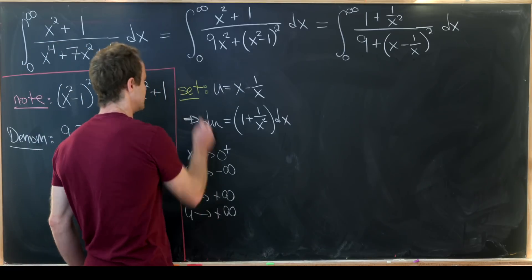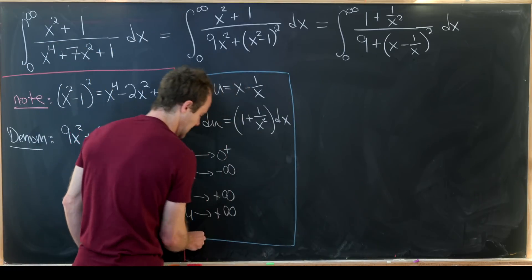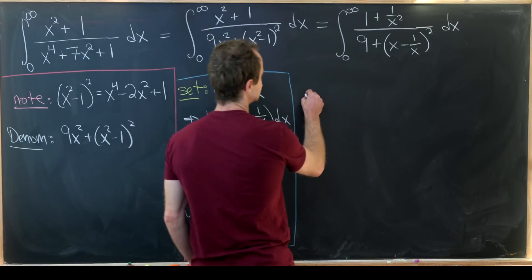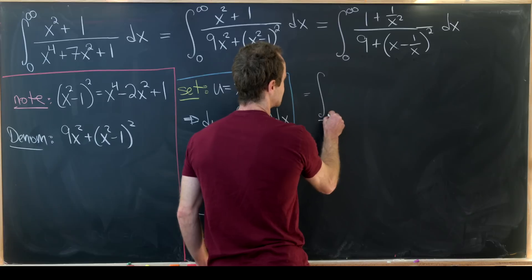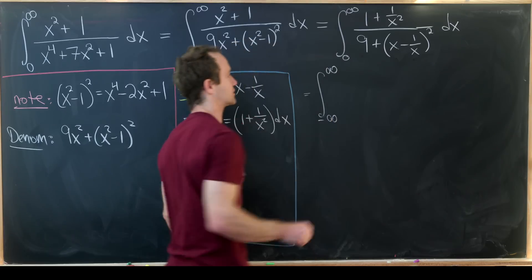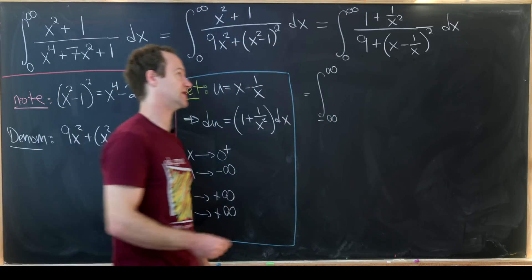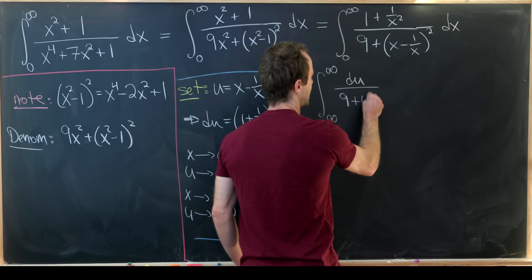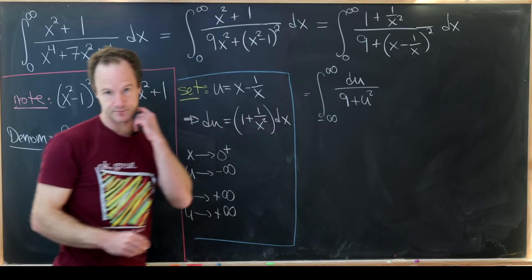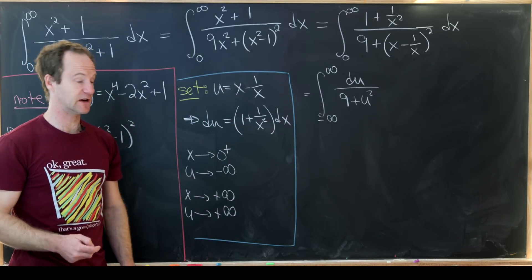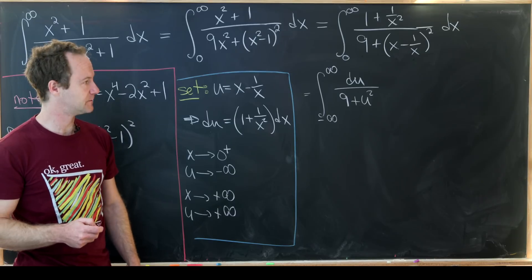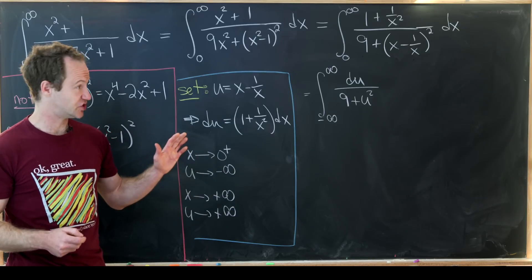So let's box this off and keep it in mind as we rewrite our integral, which is now of the form minus infinity to infinity—those are our new u bounds of integration—and then we have du over 9 plus u squared. Check it out, we've just arrived at a function that we know how to take the antiderivative of.